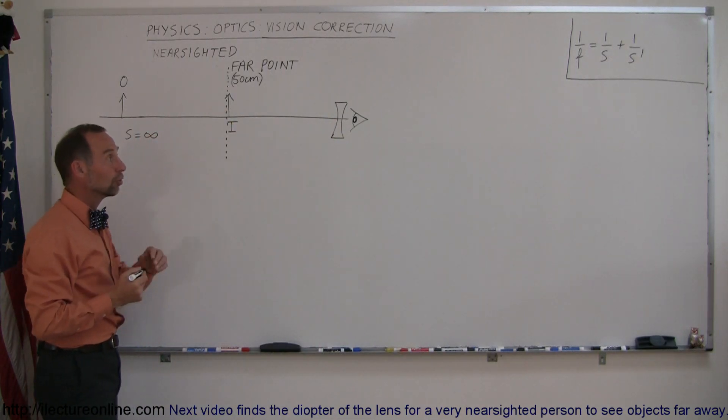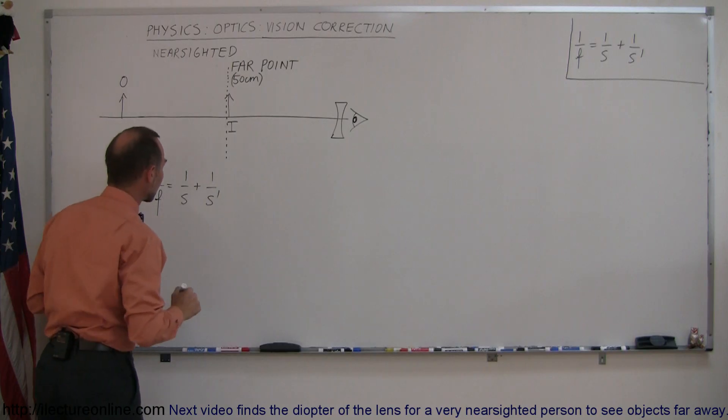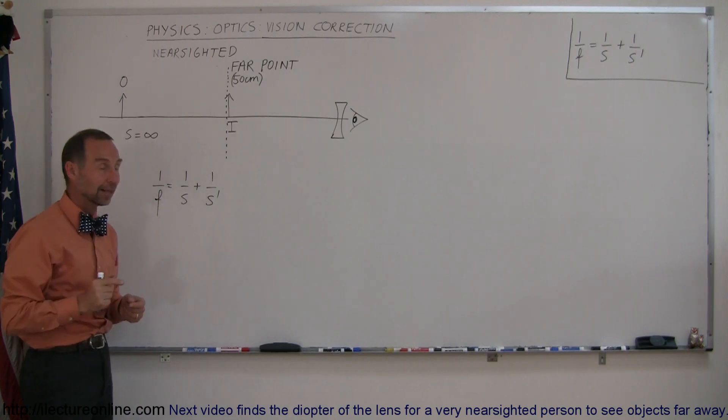How do we do that? Well, let's use the lens equation. We have 1 over f equals 1 over s plus 1 over s prime. Of course s is the object distance, s prime is the image distance, and f is the focal length, so we're trying to find the focal length of that lens.